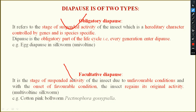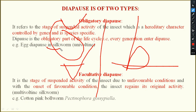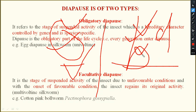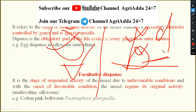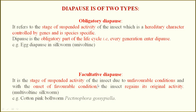What is obligatory versus facultative diapause? In obligatory diapause, a particular species will definitely undergo diapause at a particular stage regardless. Facultative diapause occurs only when an unfavorable situation arises — if no unfavorable situation exists, they may or may not undergo diapause. Facultative diapause is the stage of suspended activity due to unfavorable conditions, and with the onset of favorable conditions the insect regains its original activity.